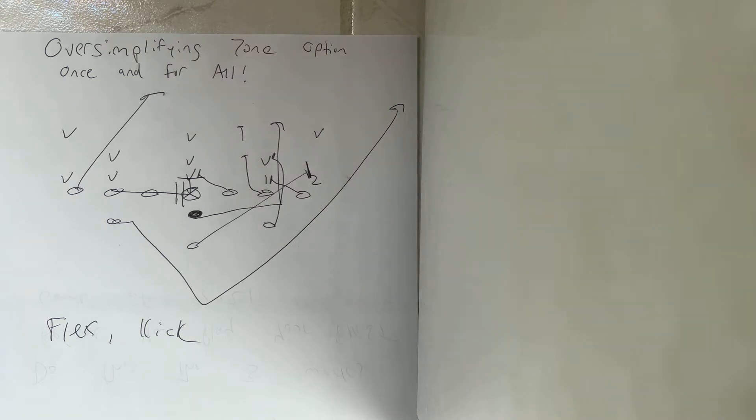First of all, it starts off with admitting the fact, really admitting two things. Number one, 95 plus percent of the time, the quarterback keeps the ball on zone option anyway.